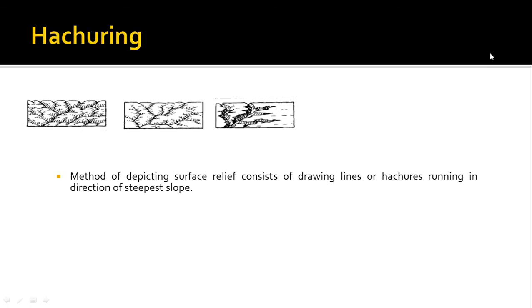The method of depicting the surface relief consists of drawing lines or hachures running in direction of steepest slope, and this is called hachuring. When the lines are closer together then the ground will be very steep, and when the lines are dispersed then the ground is gentle. So you can feel the steepness or gentleness from the concentration of these hachures.